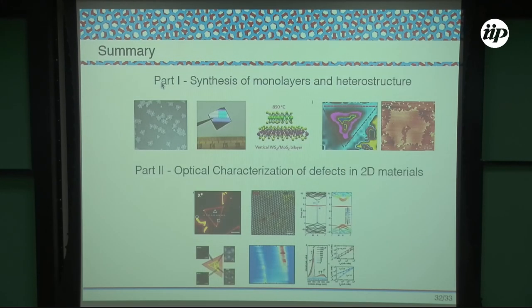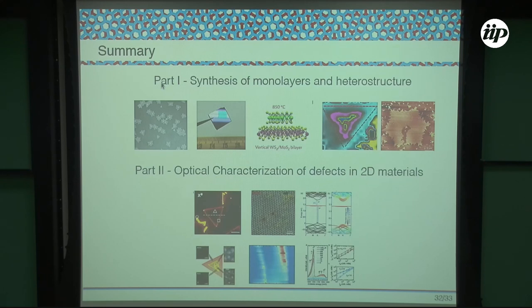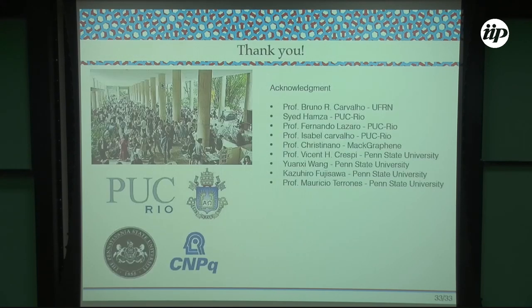In summary, in the first part I showed that it is possible to grow single-layer TMD materials using CVD — including single layers, films, vertical or lateral heterostructures, alloys, and single-crystal or polycrystalline samples — by changing synthesis parameters. In the second part, I used optical spectroscopy to identify defects in TMD systems, focusing on bound excitons. Thank you for your attention.